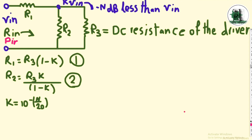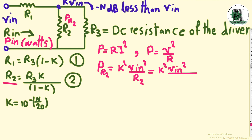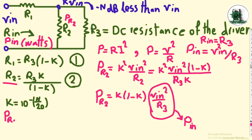The input power enters the circuit. We have two most used relationships for electrical power. According to the second one, the consumed power of R2 is calculated. Now substitute R2 in the equation. Pn is equal to this expression, and this part is the Pn. Therefore, the consumed power of R2 is determined.